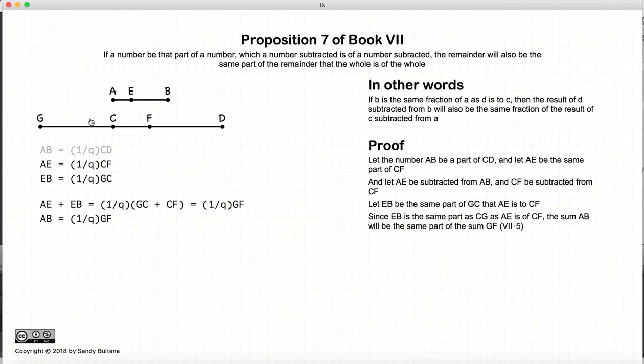Now we know from Proposition 5 from this book, that if we have two numbers that are parts, or the same parts of other numbers, that we can add them together. So we know that ae plus eb will be the same fraction of cf plus gc. Now cf plus gc is equal to gf.